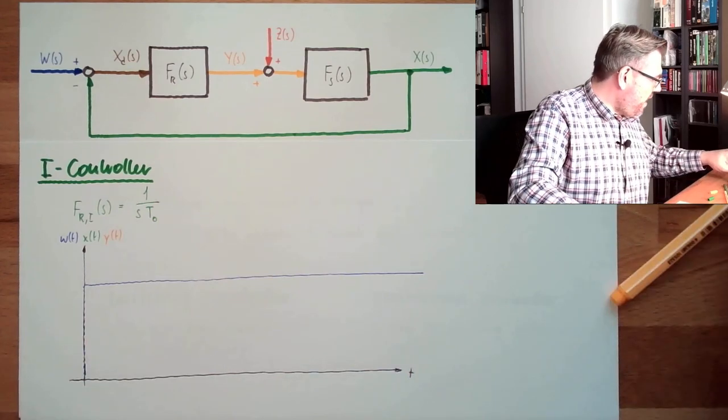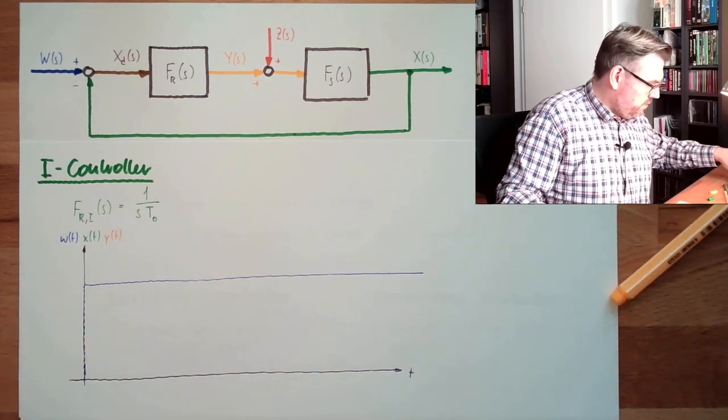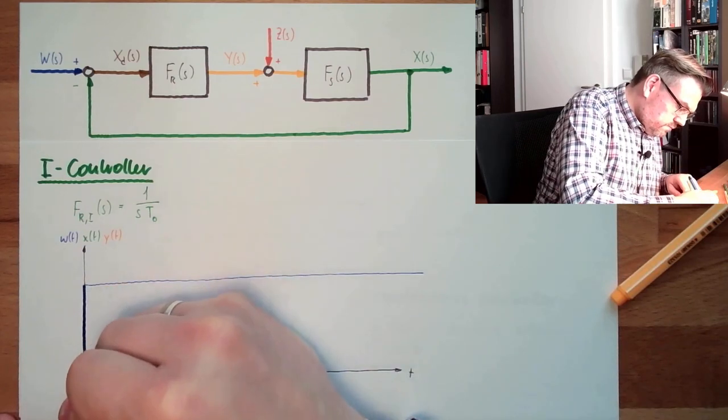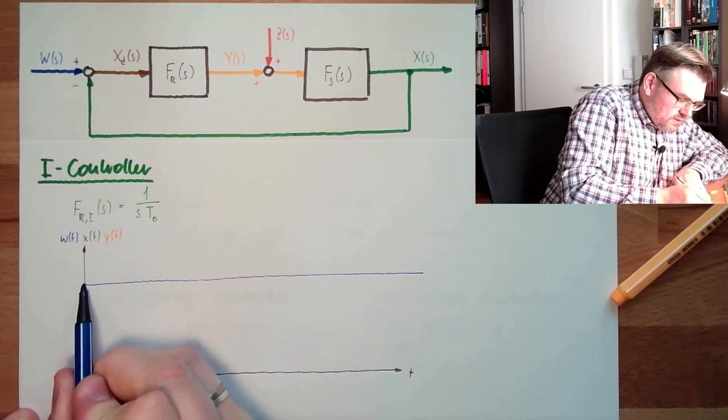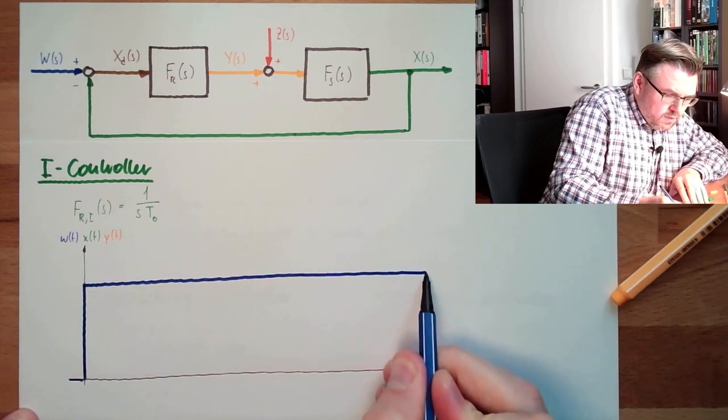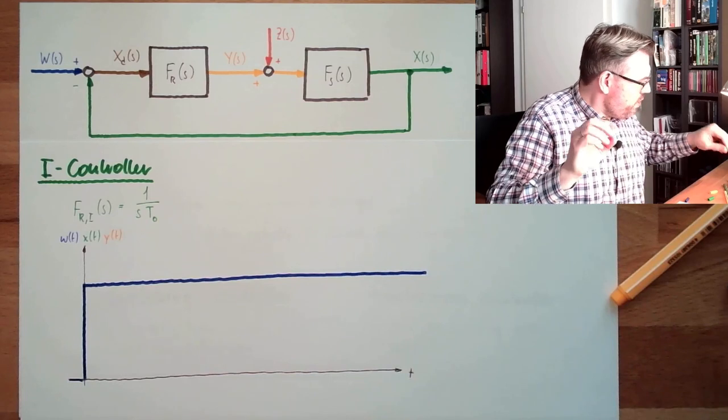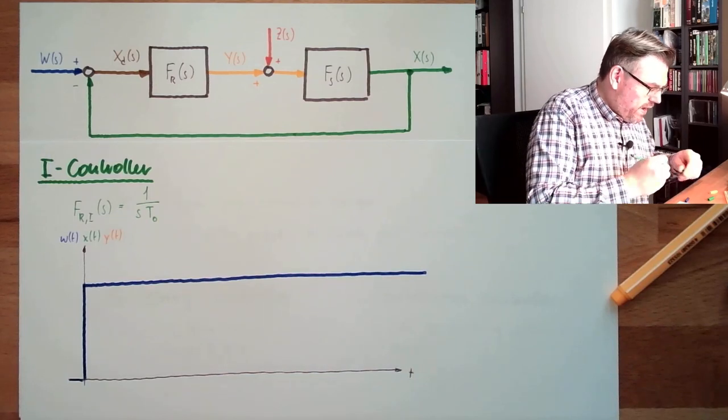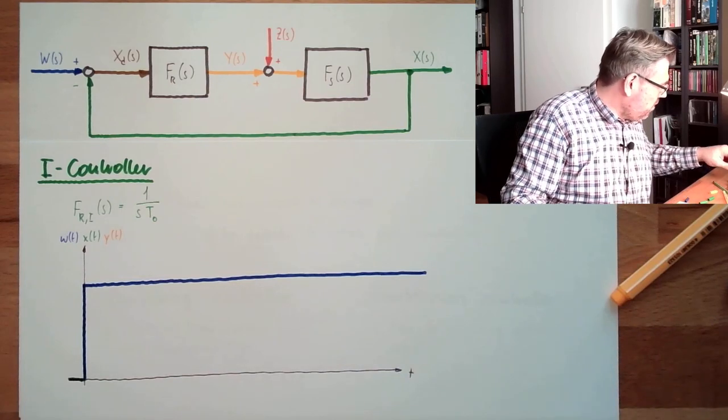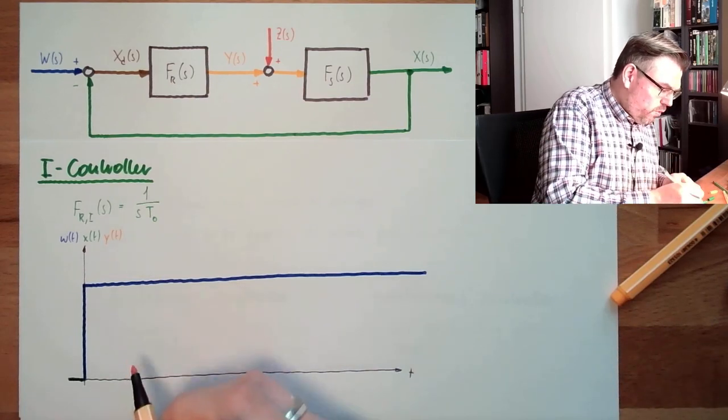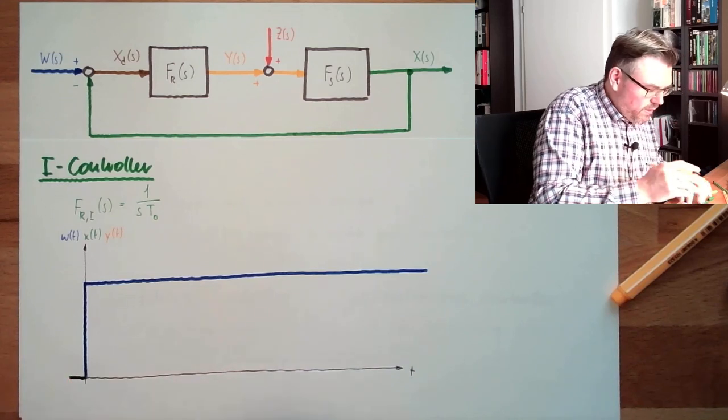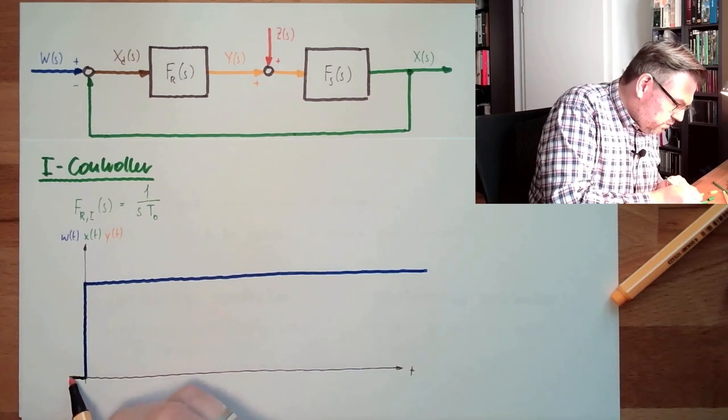Let's say our X. Let's draw this with thick lines so we can see it better. So this is where we want to go. In the beginning we say we were perfect, so our X is also here. And since we are perfect, our control deviation, our set value, let's say it's also here.